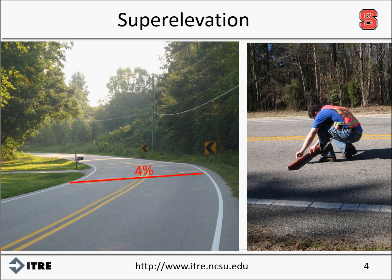Superelevation is the property of a roadway when the slope along the entire cross section of the roadway is consistent. Superelevation is typically necessary in horizontal curves to help balance the forces acting on a vehicle and keep the vehicle safely on the roadway. The superelevation, or cross slope across the entire roadway, is 4% in the picture on the left. Typical superelevation values range from 2% up to 10%. The other picture shows the measurement of superelevation on a curve. The relationship between the superelevation of a curve and its radius is critical for roadway safety.